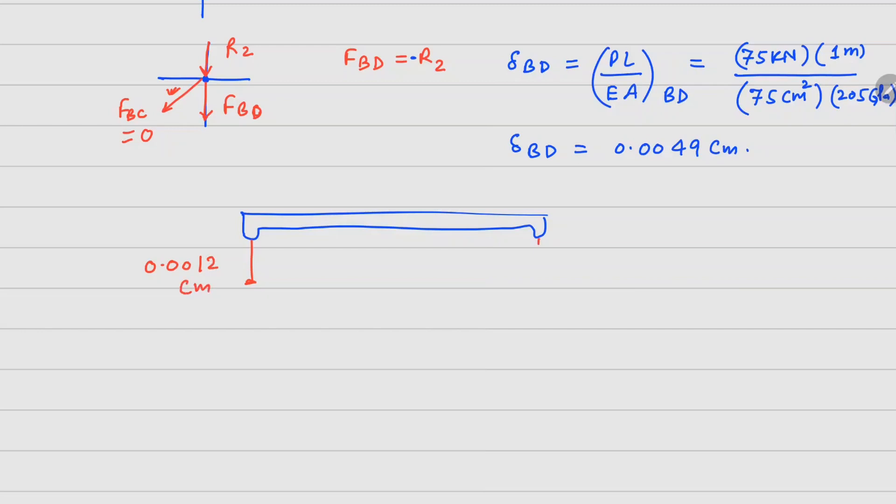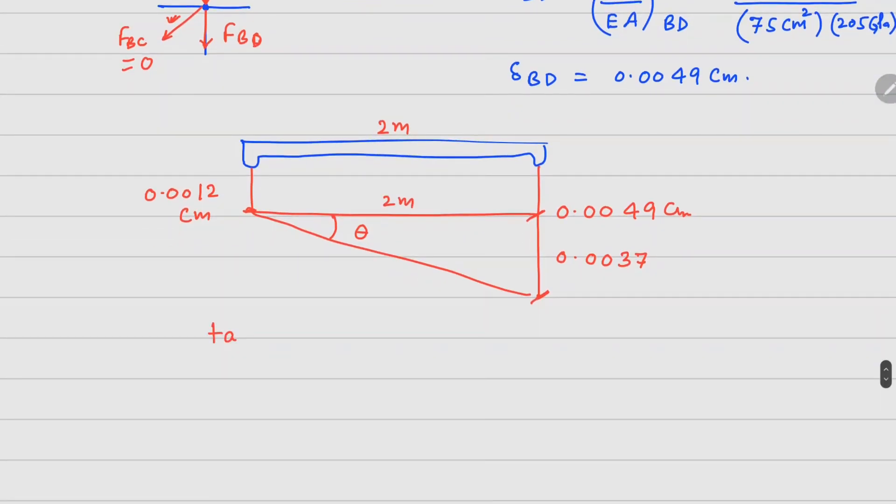And this point right here moves by 0.0049 centimeters. So you can see that there is this angle that is coming there. And if I am interested in this angle theta, this height right here is 0.0049 minus 0.0012, so 0.0037, and the gap here is 2 meters. So I can write tan theta equals to 0.0037 centimeters divided by 2 meters.